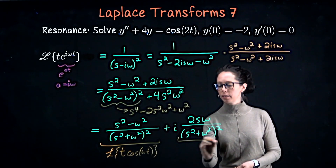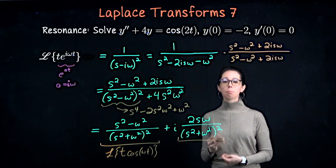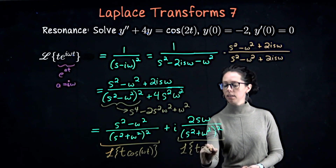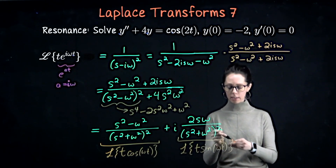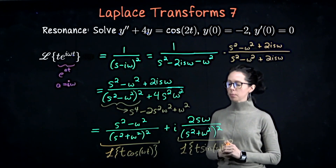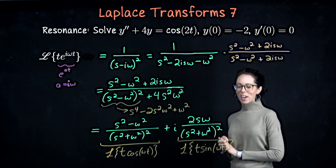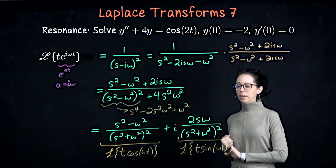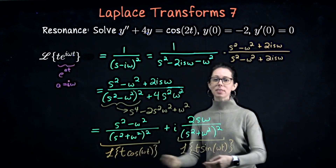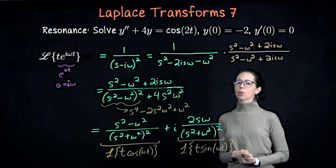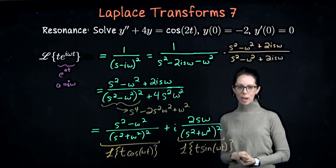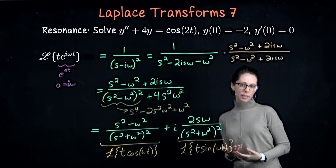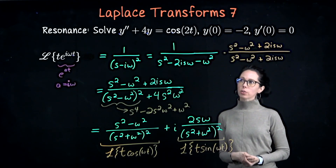Similarly, the second piece is the Laplace transform of t sine omega t, because sine omega t is the imaginary part of the complex exponential. We are now ready to solve the differential equation. These are exactly the kinds of pieces you see when you encounter resonance, which is why I wanted to establish what our standard functions look like when scaled by t.